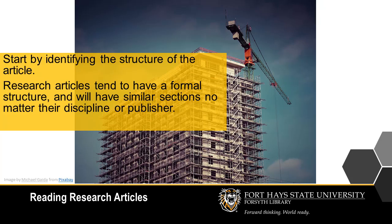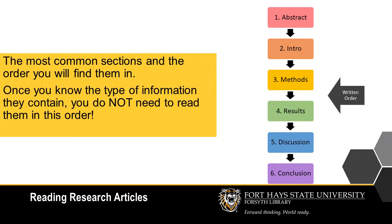Before you begin reading the article, look at its structure. Most research articles tend to have a formal structure and will have similar sections no matter their discipline or publisher. These sections might be labeled or you may have to infer what they are by their contents. These are the most common sections. Once you know what these sections are and the information they contain, you can decide which are the most important for your needs and what order you should read them in.